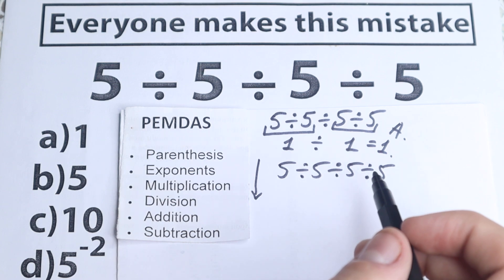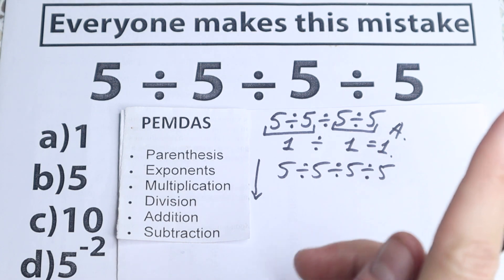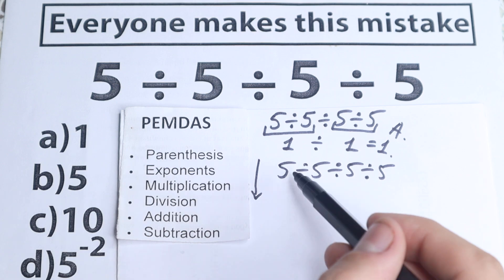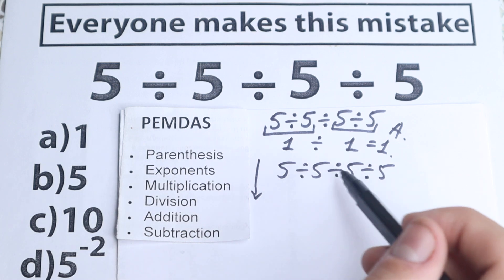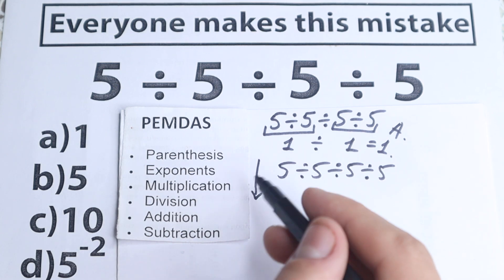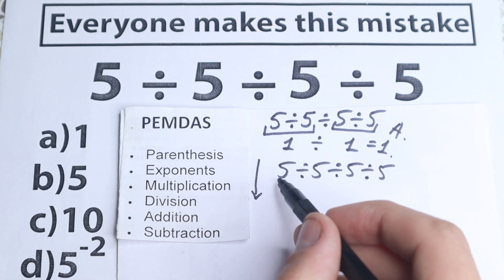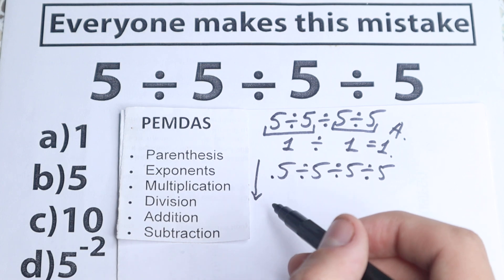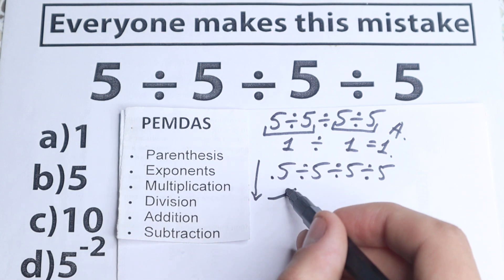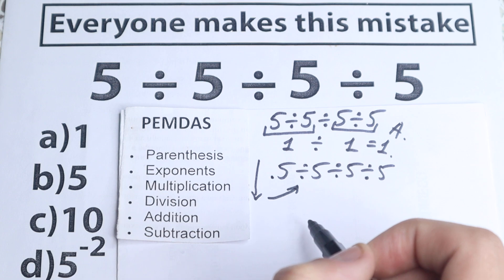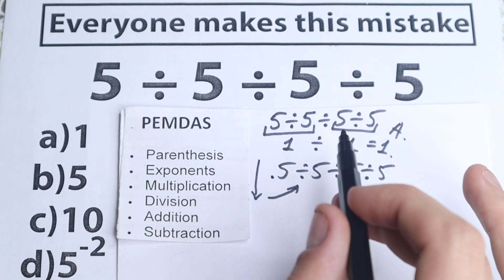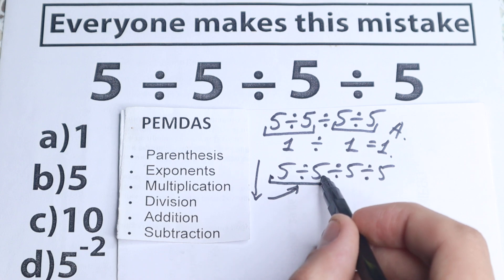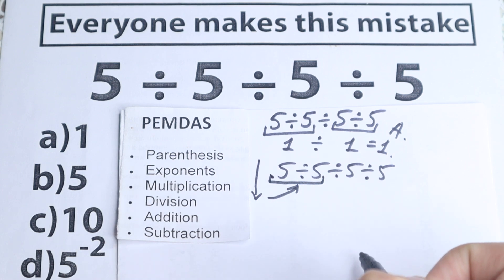Now we need to scan whether we have multiplication or division in this problem. We have only division. So now we scan for the first sign from left to right. According to PMDMC, the first sign from left to right is this division — it doesn't matter if it's multiplication or division, we just take the first one from left to right — so we divide first.